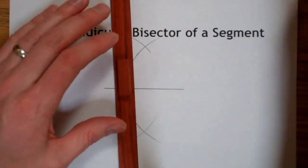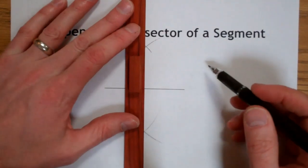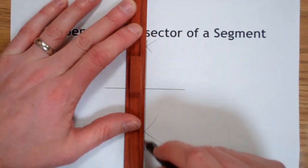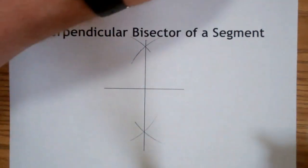Then I use my straight edge, connect those two intersections, and that's my perpendicular bisector.